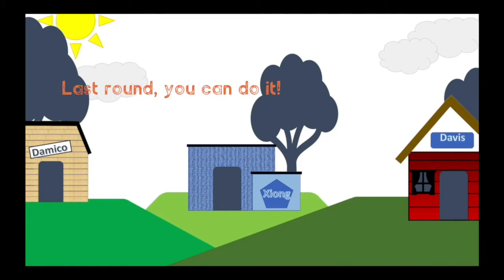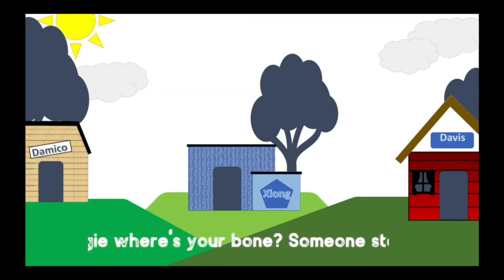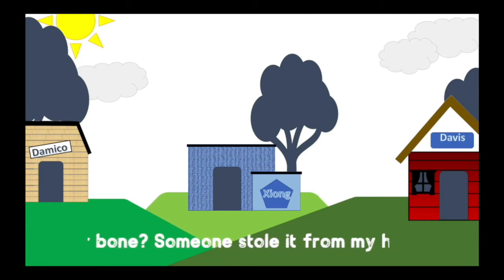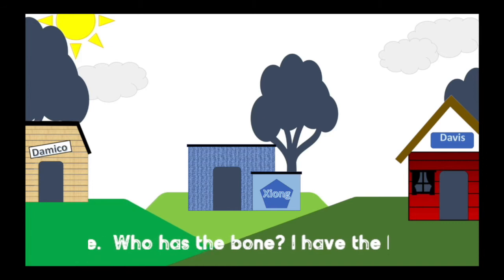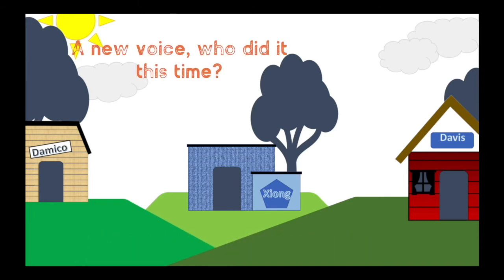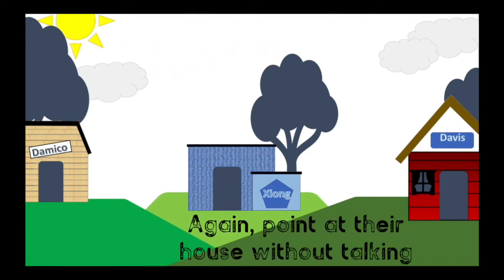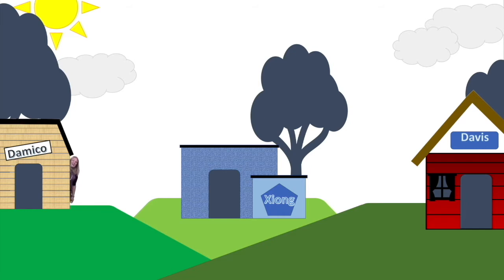Last round — you can do it. Doggy, doggy, where's your bone? Someone stole it from my home. Who has the bone? I have the bone. I have the bone. I have the bone — a new voice. Who did it this time? Again, point at their house without talking. I have the bone. I have the bone.